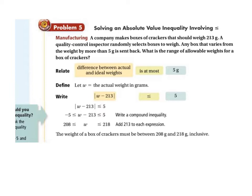Doing the same thing with less than or equals to. A company makes boxes of crackers that should weigh 213 grams. Oh, these are fun problems. I just remembered how much I like these. These are the tolerance problems. 213 grams. A quality control inspector randomly selects boxes to weigh. Any box that varies from the weight more than 5 grams is sent back. Okay? What is the range of allowable weights for a box of crackers?